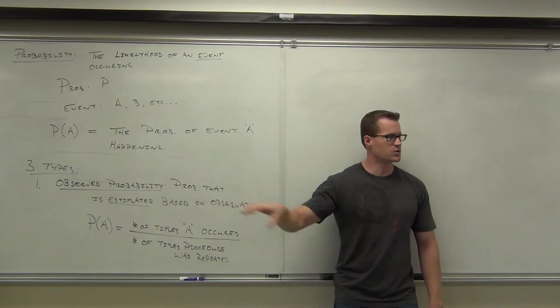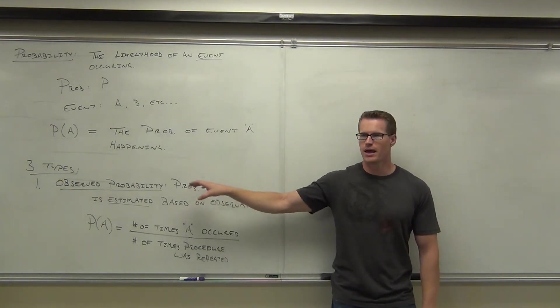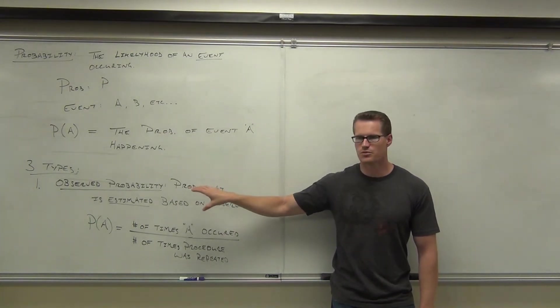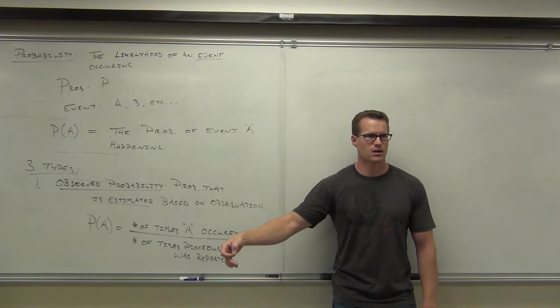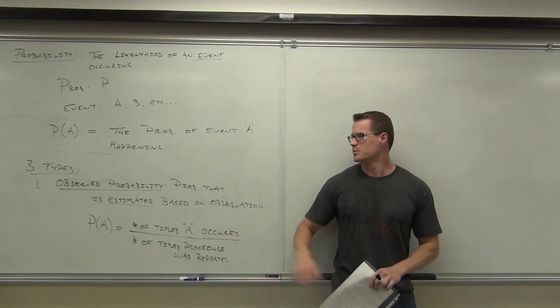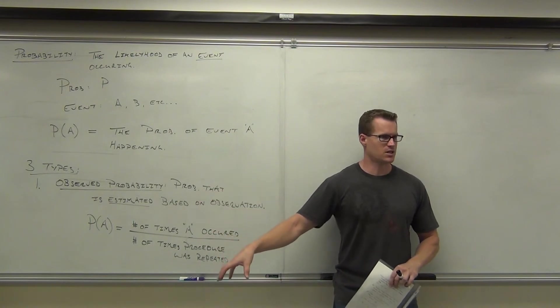Notice the difference between observed, where they actually calculated how many times you hit the ball divided by how many times you were up, to classical. Classical is a theory. Observed probability is the actuality. Classical is what should happen. Observed is what did happen. Do you see the difference there?